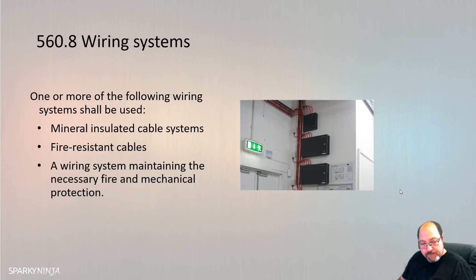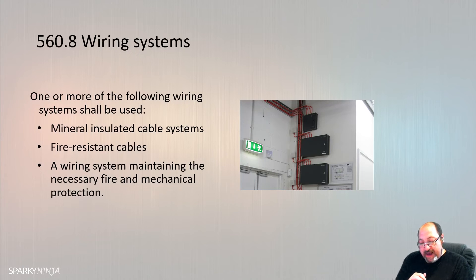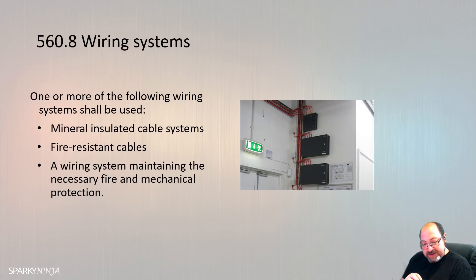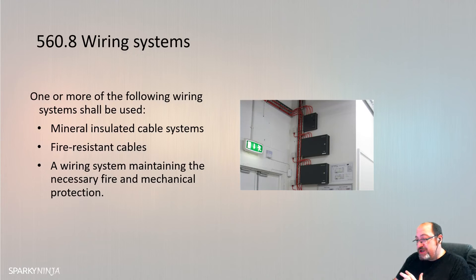For wiring systems, one or more of the following shall be used: MI cable or fire-resistant cables. The wiring system shall be selected to meet the requirements of the relevant code of practice and shall be mounted and installed so that circuit integrity will not be impaired during a fire. Wiring for control and bus systems of safety services shall follow the same requirements as the safety service wiring itself, unless those circuits do not adversely affect the operation of any safety equipment. Supplies can be direct current provided there are two-pole overcurrent protective devices, and switchgear and controlgear for both AC and DC supply sources shall be suitable for both AC and DC operation.